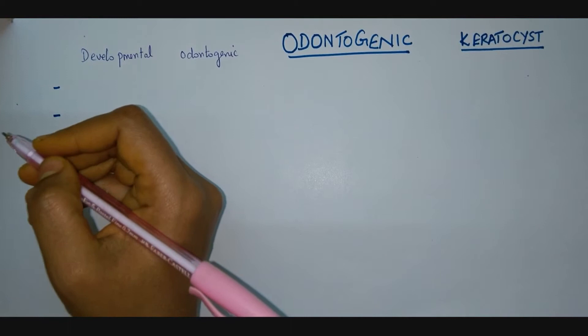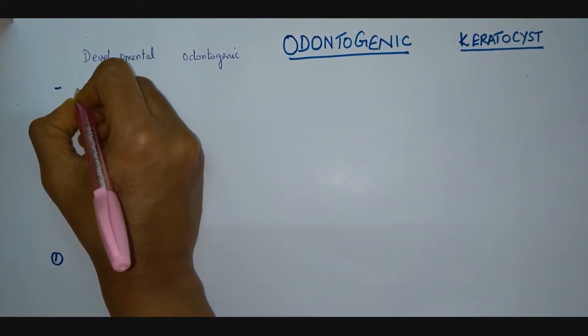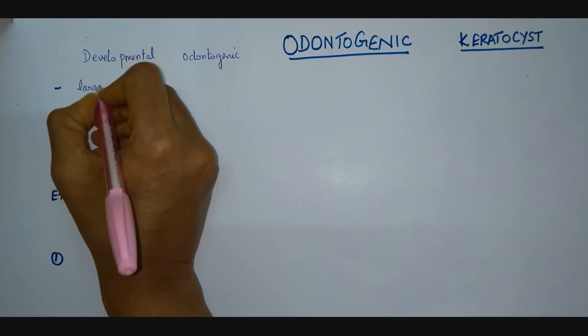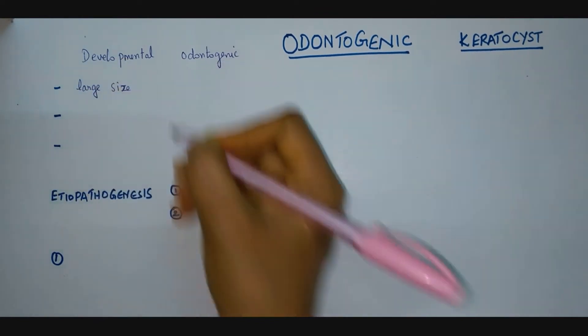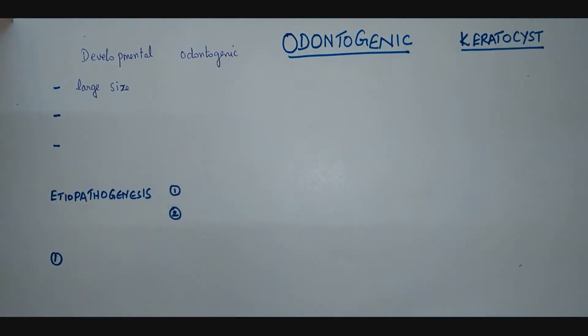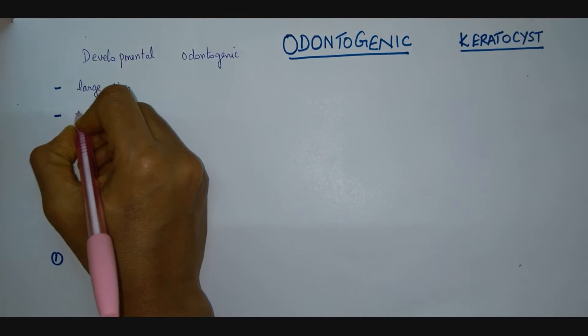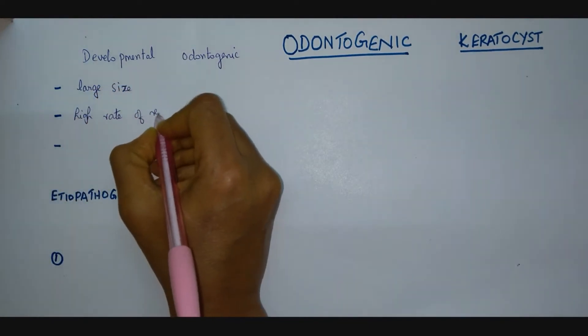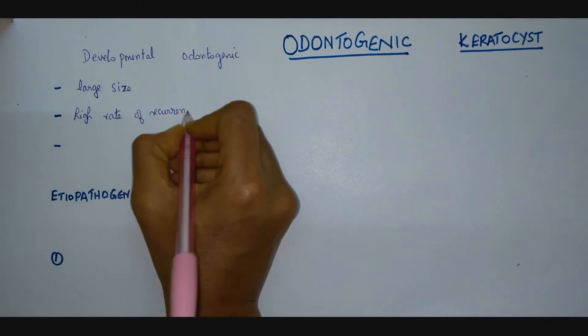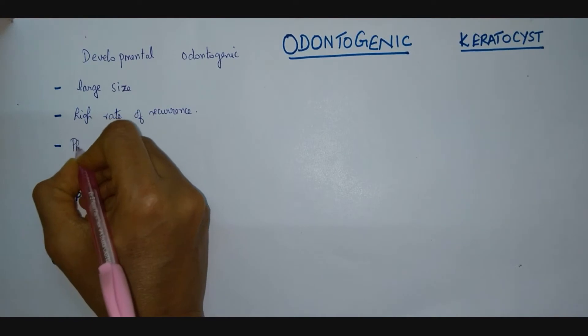Now why should we know about this odontogenic keratocyst? It is important to know for two main reasons. First is the cyst may grow to such a large size even before it is clinically diagnosed, and next is because the cyst has a very high rate of recurrence. The term odontogenic keratocyst was given by Philipson in the year 1956.